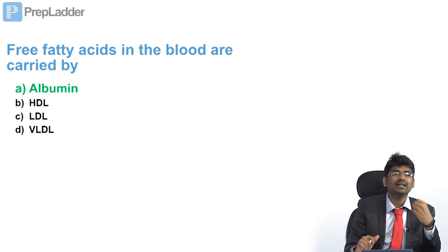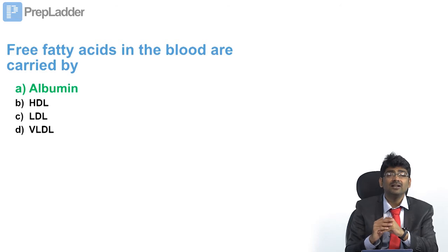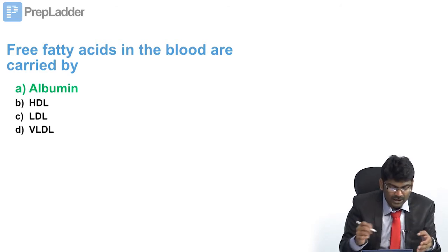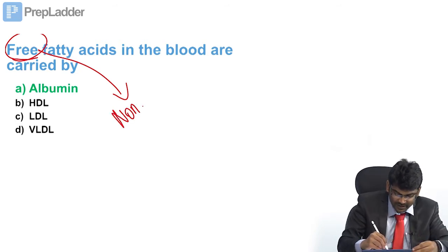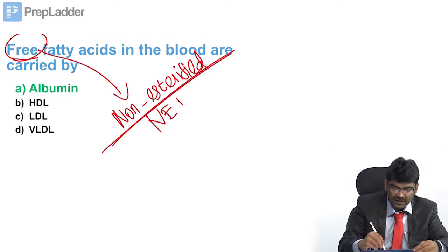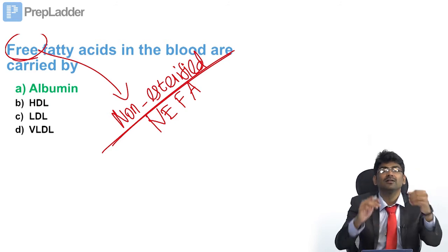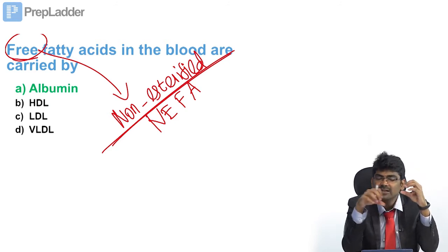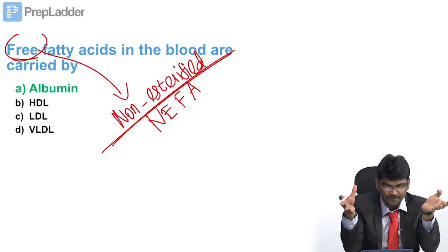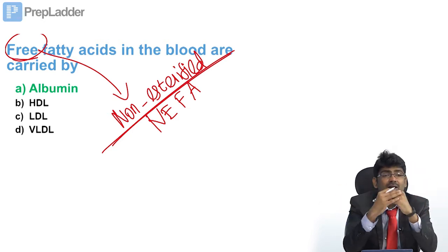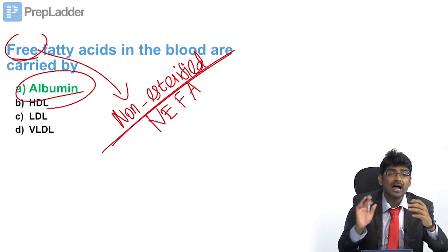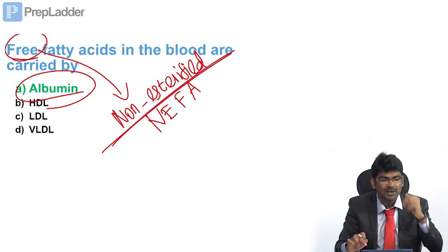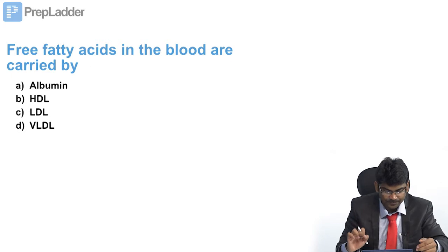Free fatty acids in blood are carried by? Free fatty acids are not truly free — the term 'free' indicates they are non-esterified, i.e., NEFA (non-esterified fatty acids). Esterified fatty acids are those esterified with glycerol in triglycerides or some other compound. Non-esterified fatty acids are carried by albumin. The hydrophobic cleft in albumin carries free fatty acids.